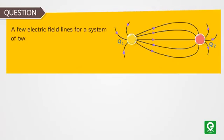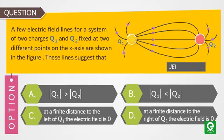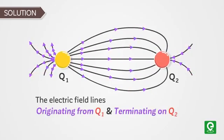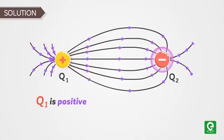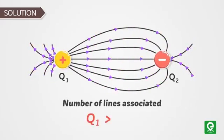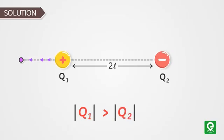Let's solve an example based on these properties. A few electric field lines for a system of two charges q1 and q2 fixed at two different points on the x-axis are shown in the figure. The lines suggest that q1 is positive and q2 is negative, since field lines originate from q1 and terminate on q2. This question was asked in the JEE Advanced 2010 exam. Also, since the number of lines associated with q1 is greater than those associated with q2, the magnitude of q1 is greater than the magnitude of q2.